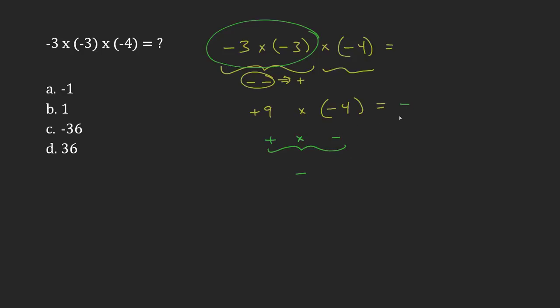Now that I've dealt with what the sign is going to be, I can just focus on the numbers. So nine times four is 36. So this is going to be negative 36 is my answer. So the answer is C.